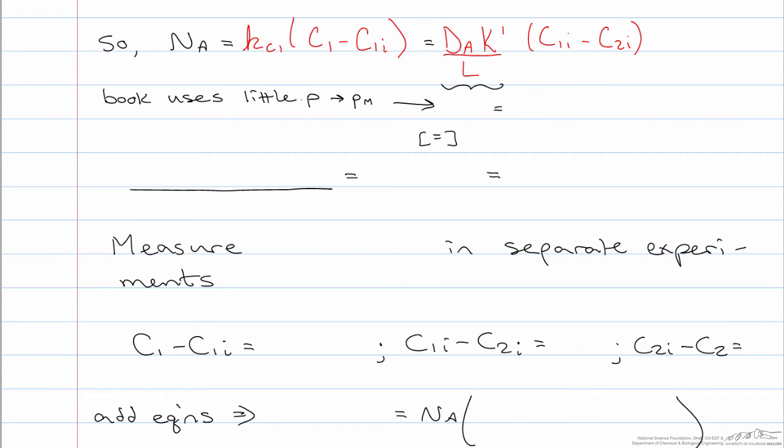So again we have assumed that the equilibrium constant is the same on both sides of the membrane, and that is then equal to Kc2 times C2i minus C2.